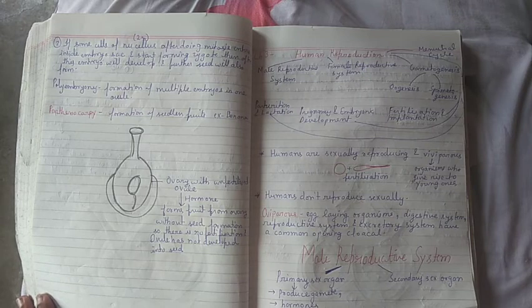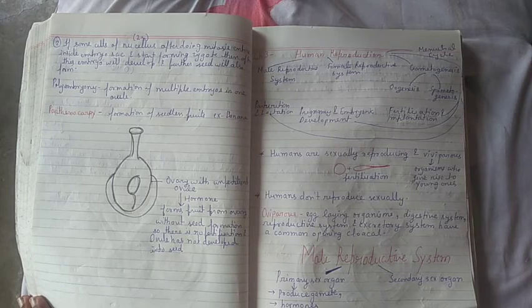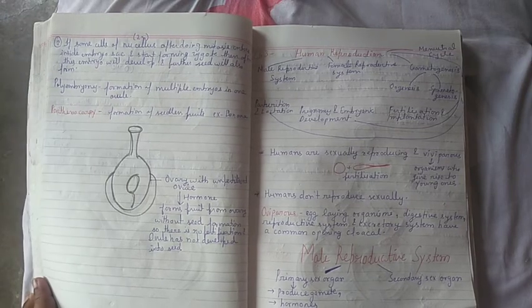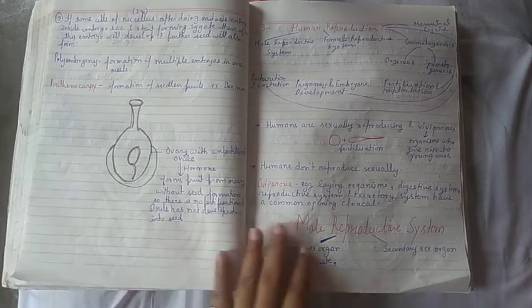Let us now examine the male and female reproductive system in humans. Our first topic is the male reproductive system.